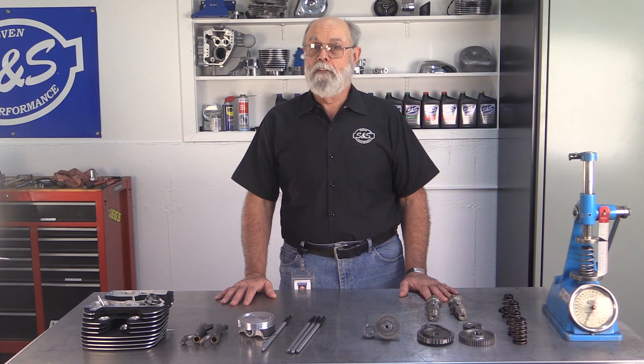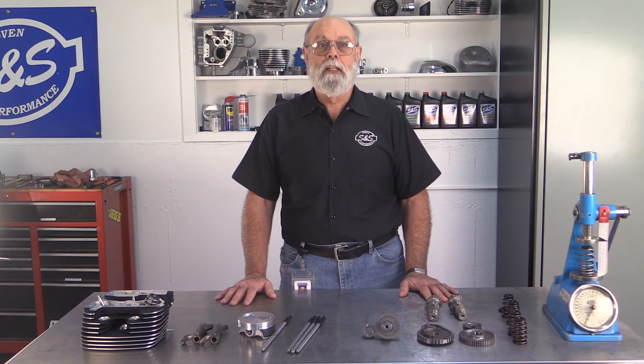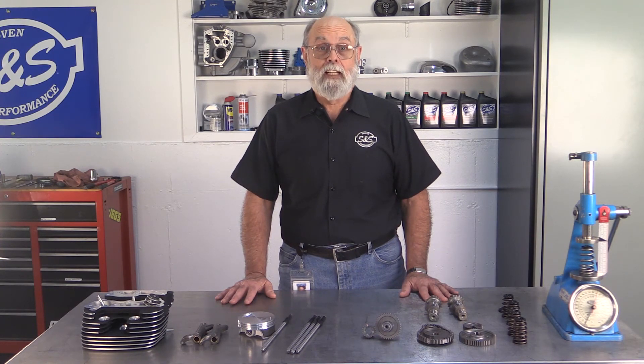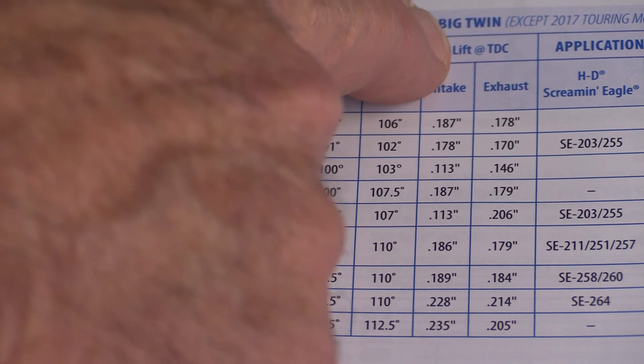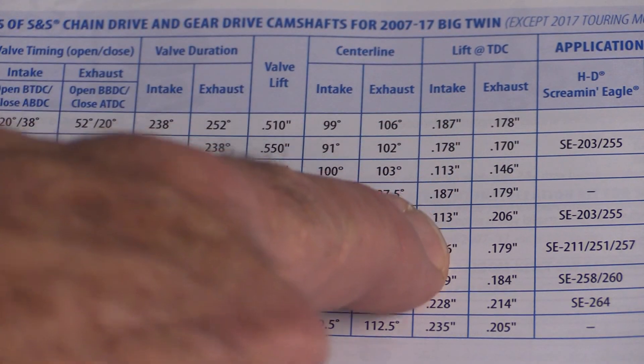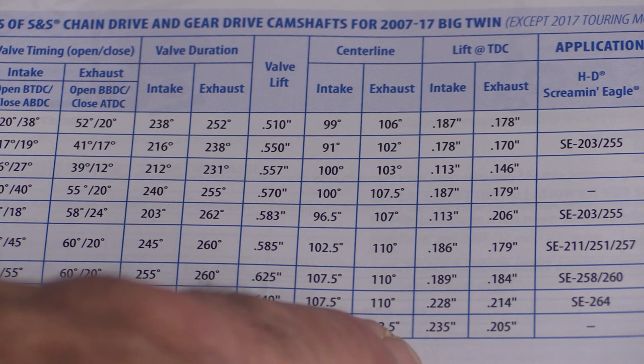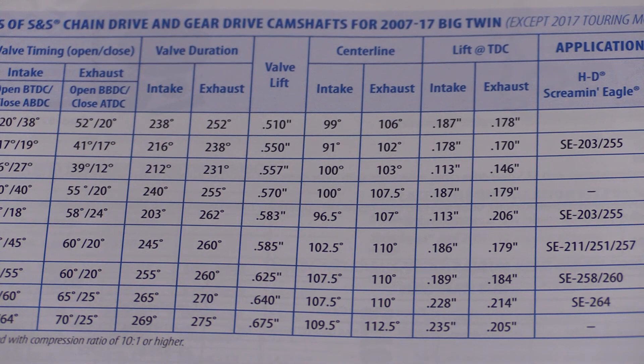Hi, Bruce here from S&S again. Welcome back for the third in our series of cam specification videos. In the first video, we covered the role of the camshaft in a four-cycle engine and how it works. In the second video, we discussed the big three — the three most important specifications to consider when selecting a cam for a specific engine and application. In this video, we're going to look at a couple of other specifications that you may see in cam spec charts. These are not as critical in the selection process, but may be secondary influencers and are generally more useful to engine builders and installers.